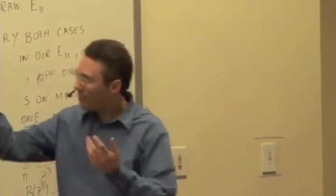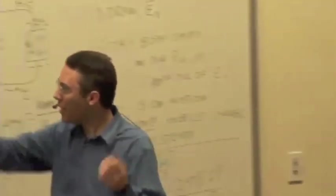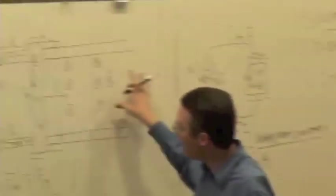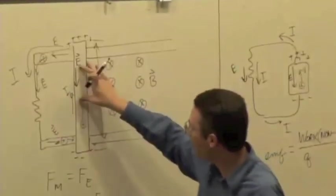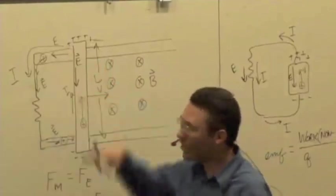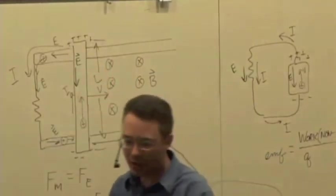So by moving a bar in a magnetic field, we can create a polarization, and then actually get it to drive a current. That's going to be useful for various technological applications, and we'll talk more about those next time.